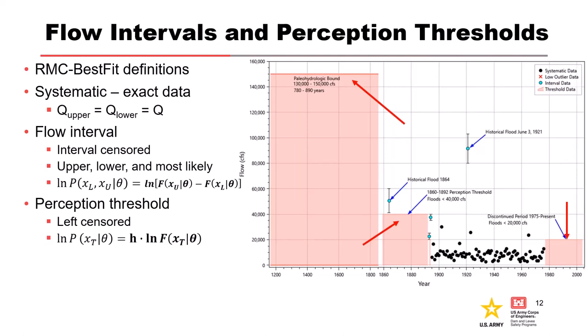Now onto perception thresholds in Best Fit — they have the same concept as in Bulletin 17C, but you enter a single value to represent the threshold. It's just the flow value that defines the top of the red area. That flow value represents the flow at which, if a flood had occurred, it would have exceeded the threshold and been recorded. Therefore the perception threshold is an upper bound with the lower bound automatically equal to zero. The shaded red area reflects that any flood event in that period would range from zero up to that perception threshold value.